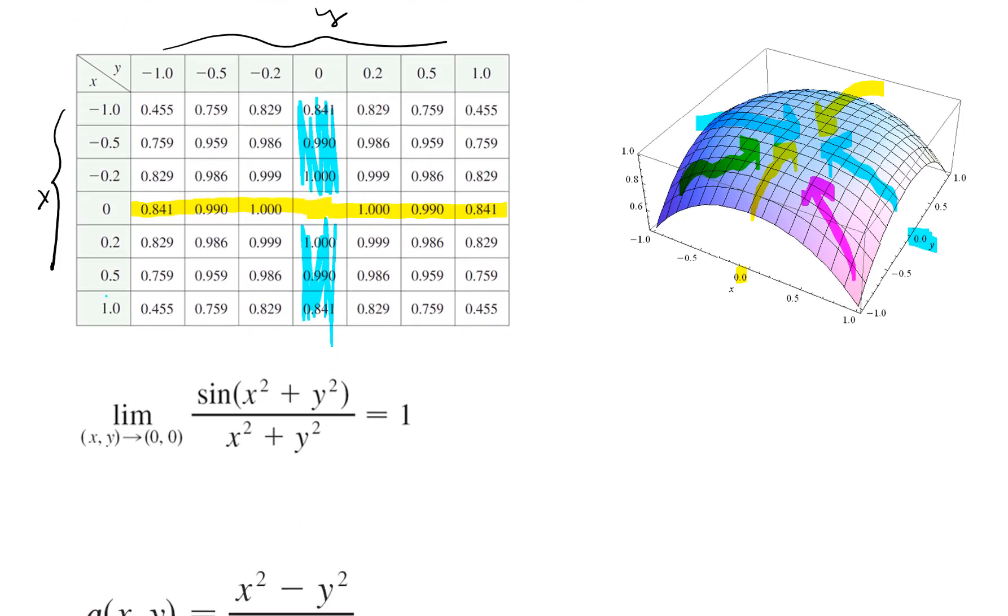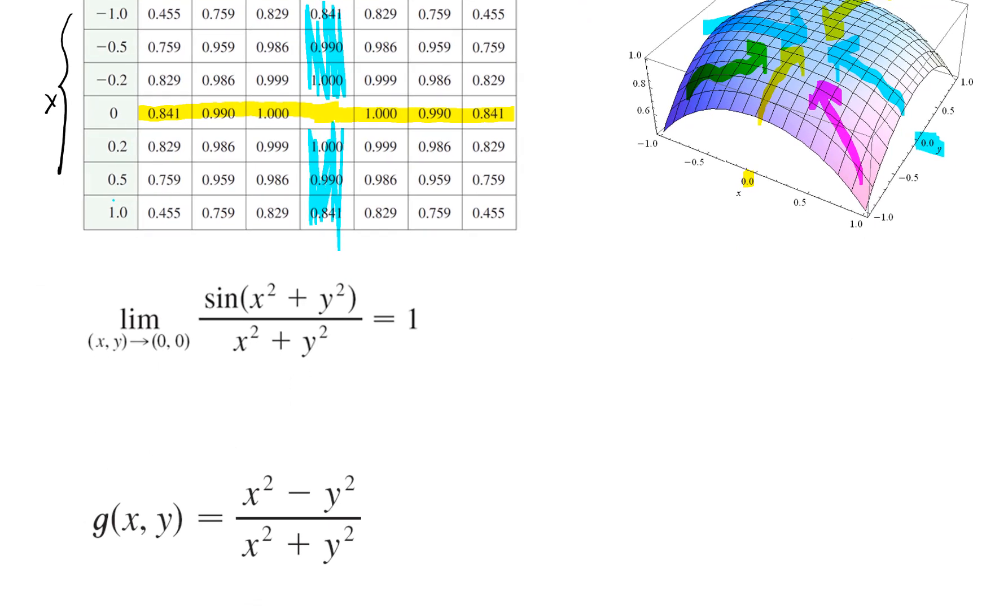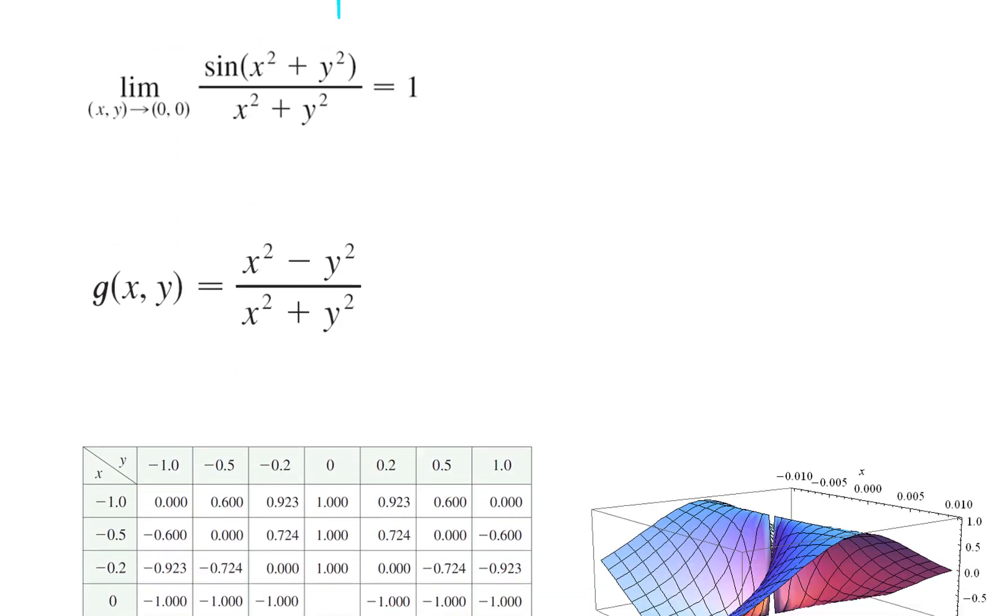Now, let's look at a different example. Suppose I give you g of x, y equals x squared minus y squared over x squared plus y squared. Let's look at a table and a visualization.